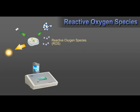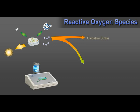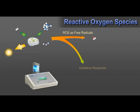Scientists describe how the highly reactive molecules utilize their reaction energy in one of two distinct ways: oxidative stress and oxidative response. For oxidative stress, ROS acts as free radicals that harm cells. For oxidative response, ROS acts as second messengers — signaling molecules that initiate the protection and repair of cells.